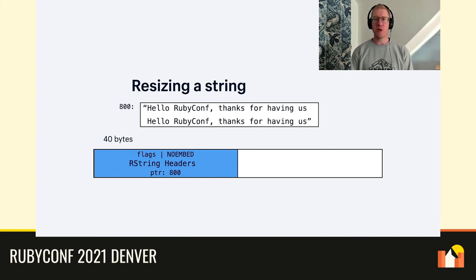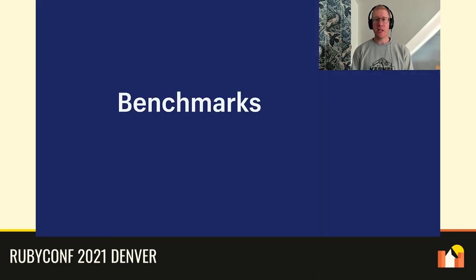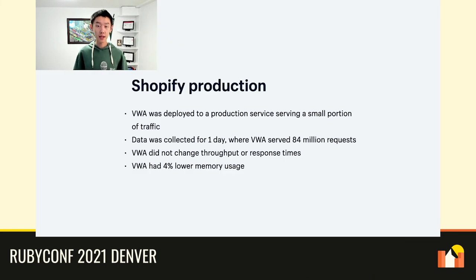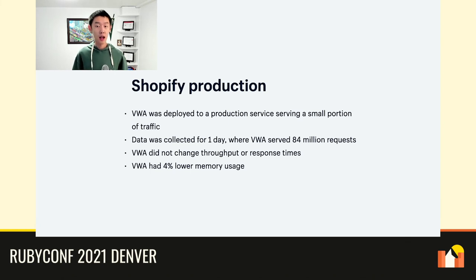Benchmarks of memory performance have shown that resizing waste is not a very significant issue for the workloads we tested. We deployed variable width allocation on a small portion of production traffic of a Shopify service and collected data over one day, where each branch served around 84 million requests. We did not see a change in response times beyond the margin of error — we looked at average, 50th, 90th, and 99th percentile response times. However, variable width allocation did decrease memory usage by about 4%.